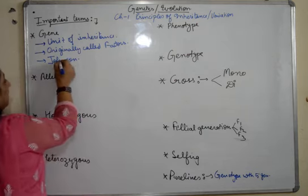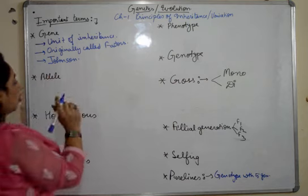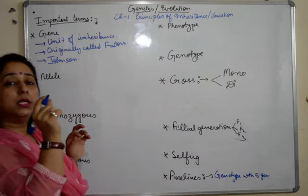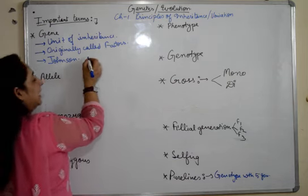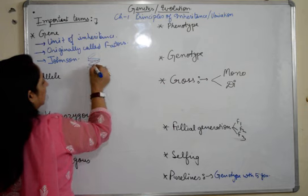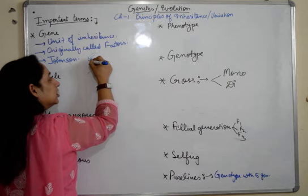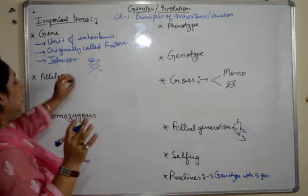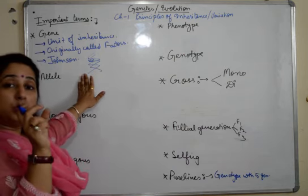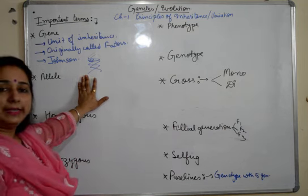In simple language, a gene is just a very small fraction or code present on the DNA. DNA is a double helical structure, and a single code present on the DNA is known as a gene. Some students get confused between DNA and gene. The basic code or functional unit — the first unit which collectively forms the next units of inheritance — is the gene.